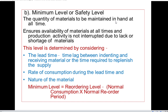The formula to find the minimum level is: Minimum Level = Reorder Level − (Normal Consumption × Normal Reorder Period).